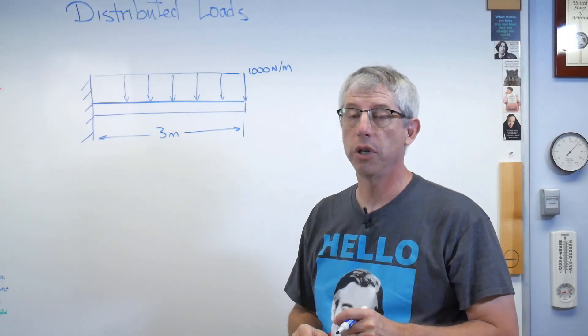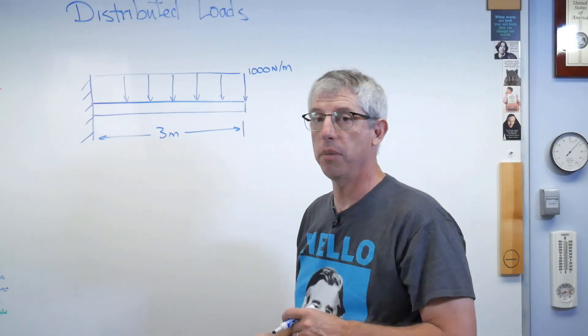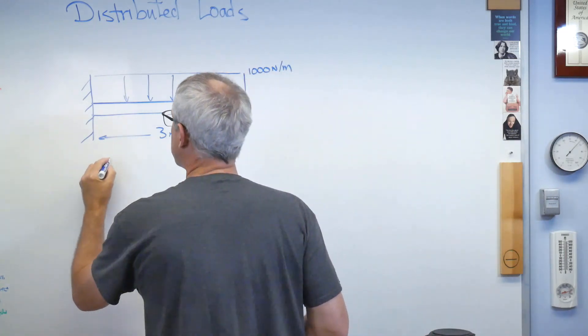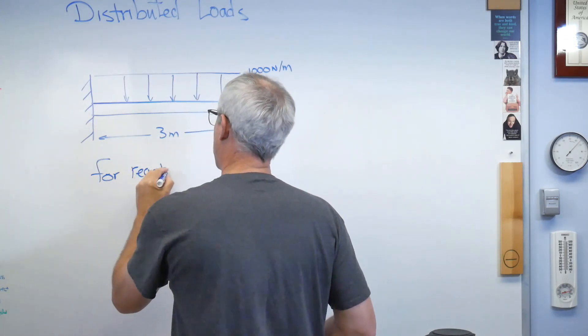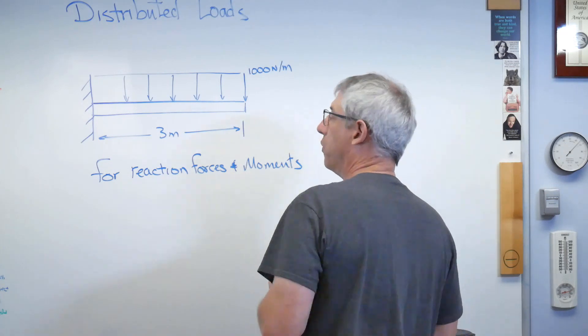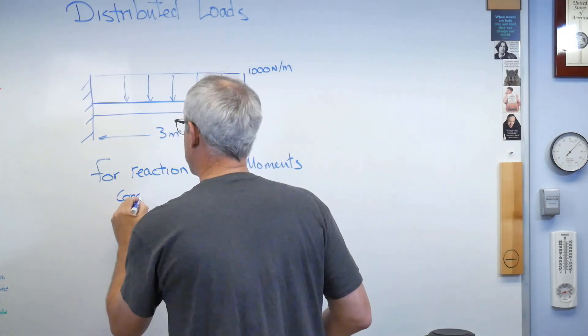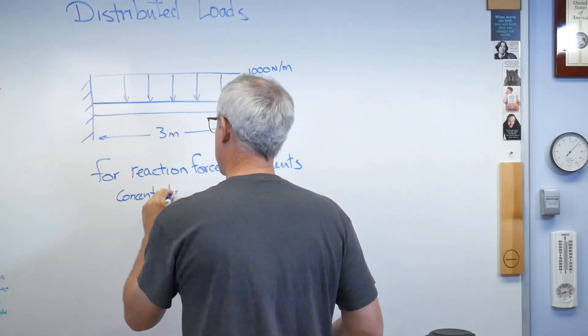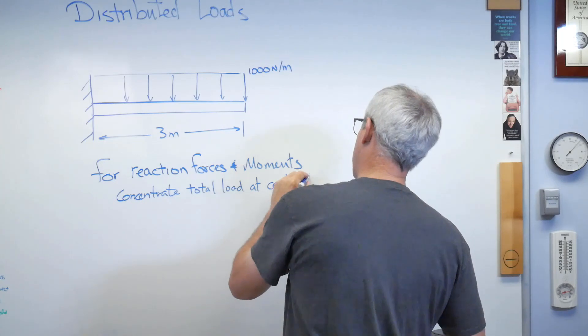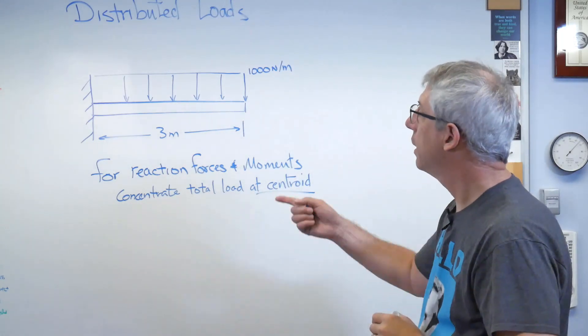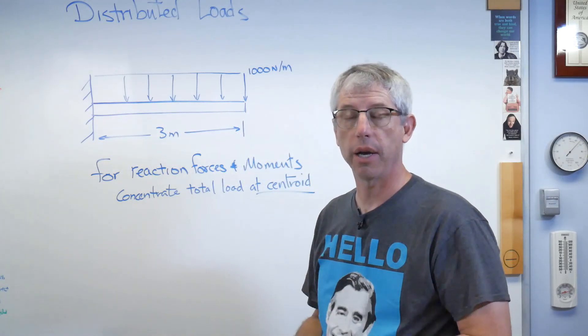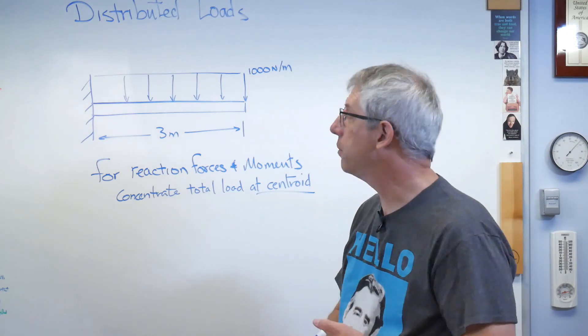So for the sake of reaction forces and reaction moments, I can concentrate this force at the centroid, and the beam back here doesn't know the difference. Now, if I'm trying to do load-shear moment diagrams and calculate the reactions along the beam, it's more complicated. I do have to account for this as I move out. That'll be another video. So for reaction forces and moments, you can concentrate the total load at the centroid. Now, remember the recipe. I have a working diagram. I'm going to draw a free body diagram. I'm going to sum the forces and moments, and then I'm going to solve for something. So let's do that.